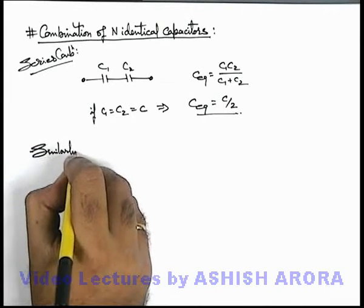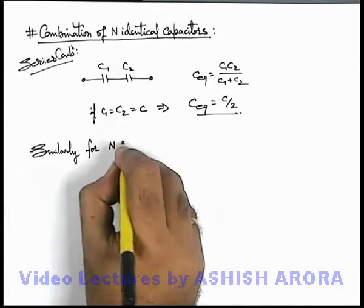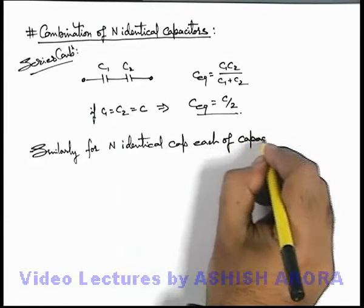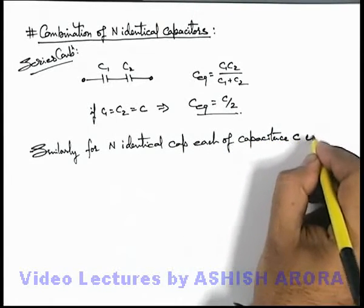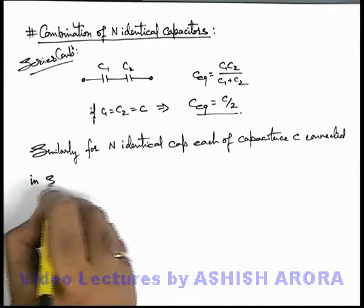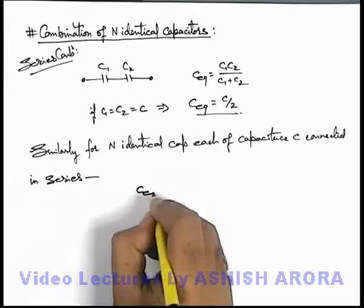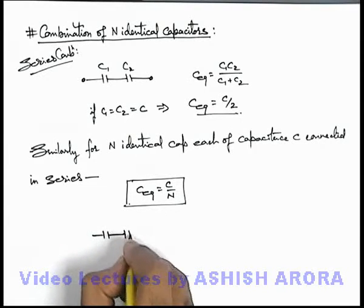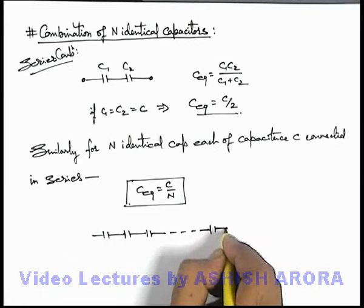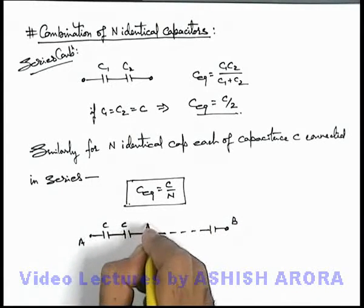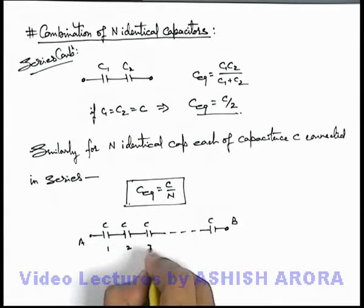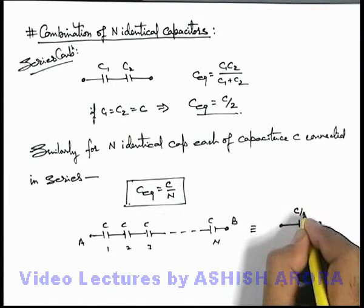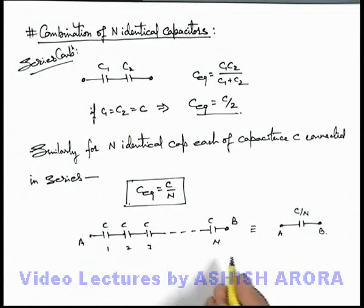Similarly, for n identical capacitors, each of capacitance C, connected in series, the equivalent capacitance is given as C by n. Always remember this: whenever n capacitors which are identical are connected one after another in series, across terminals A and B, if all capacitors are equal — 1, 2, 3, up to n — then the equivalent capacitance can be directly replaced by a capacitor having capacitance C by n. That you should always keep in mind.